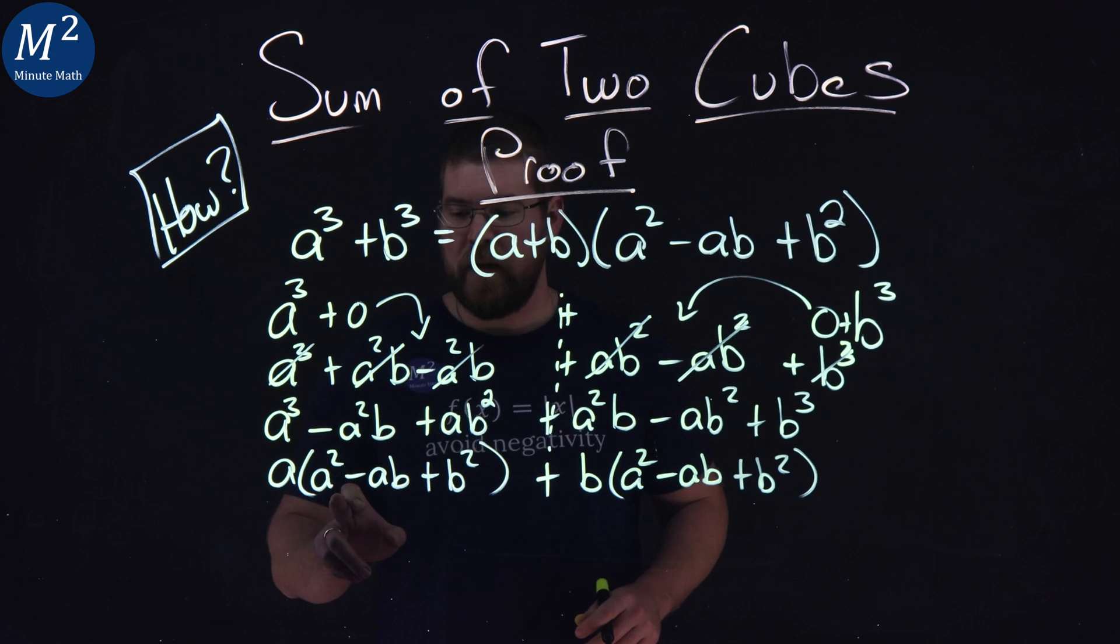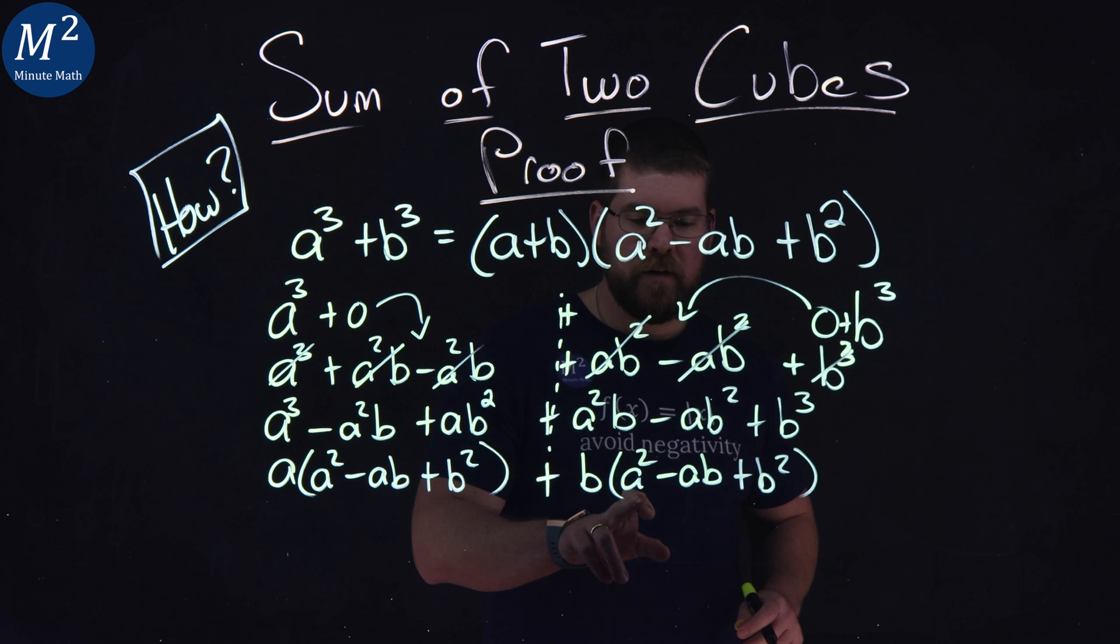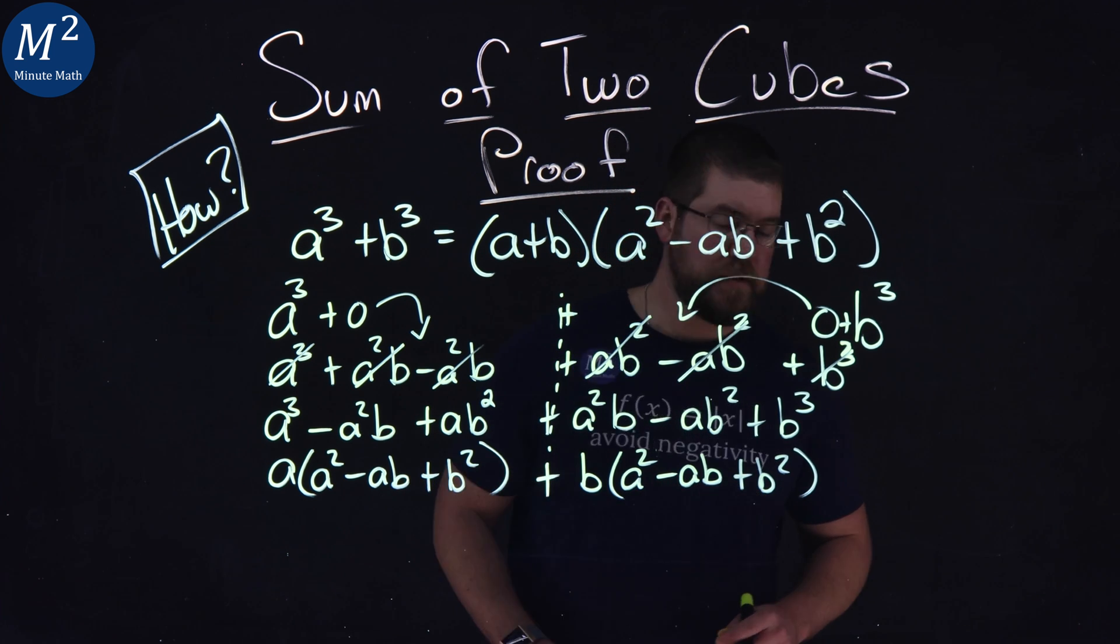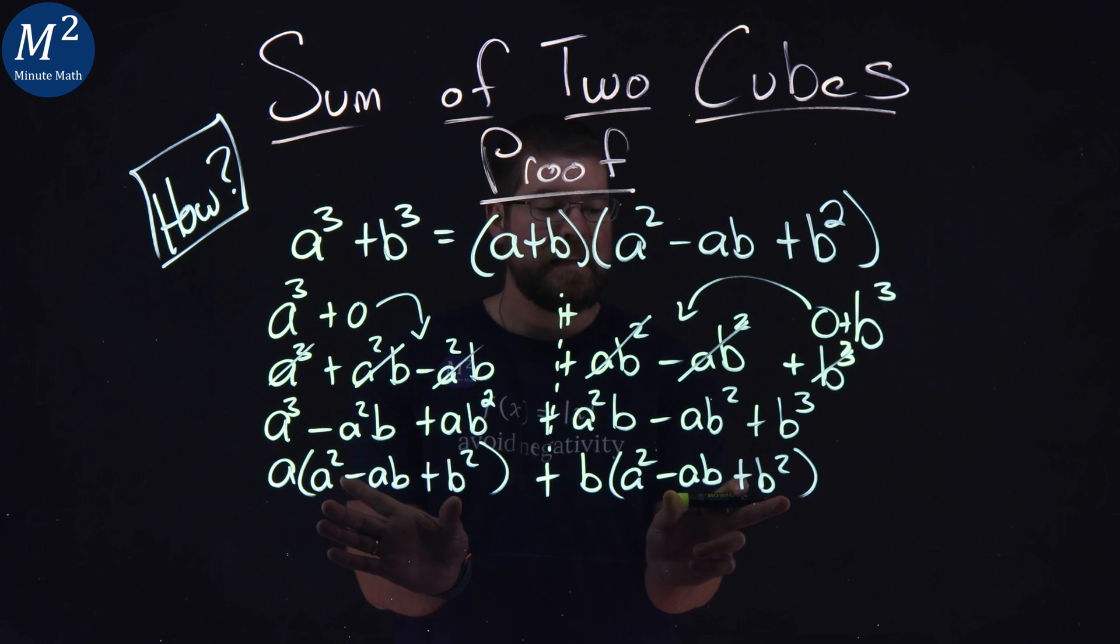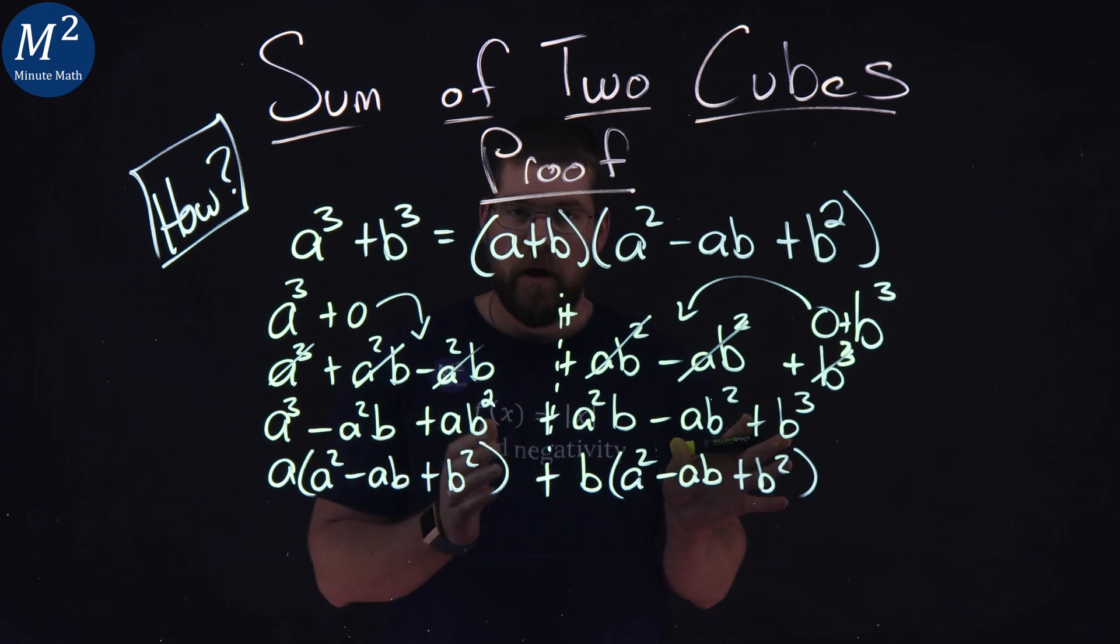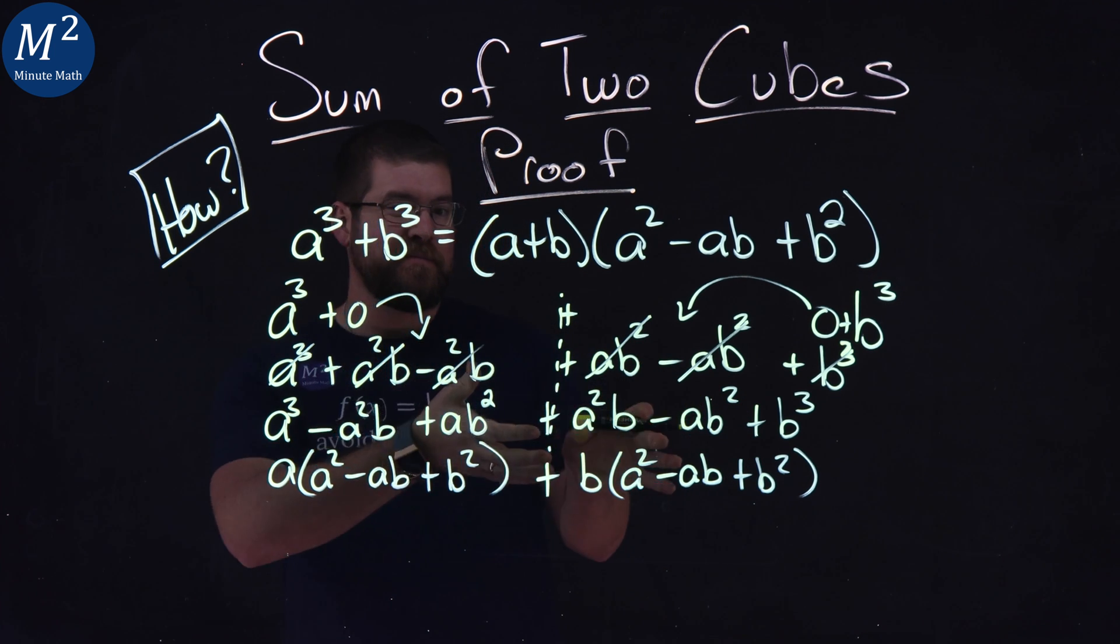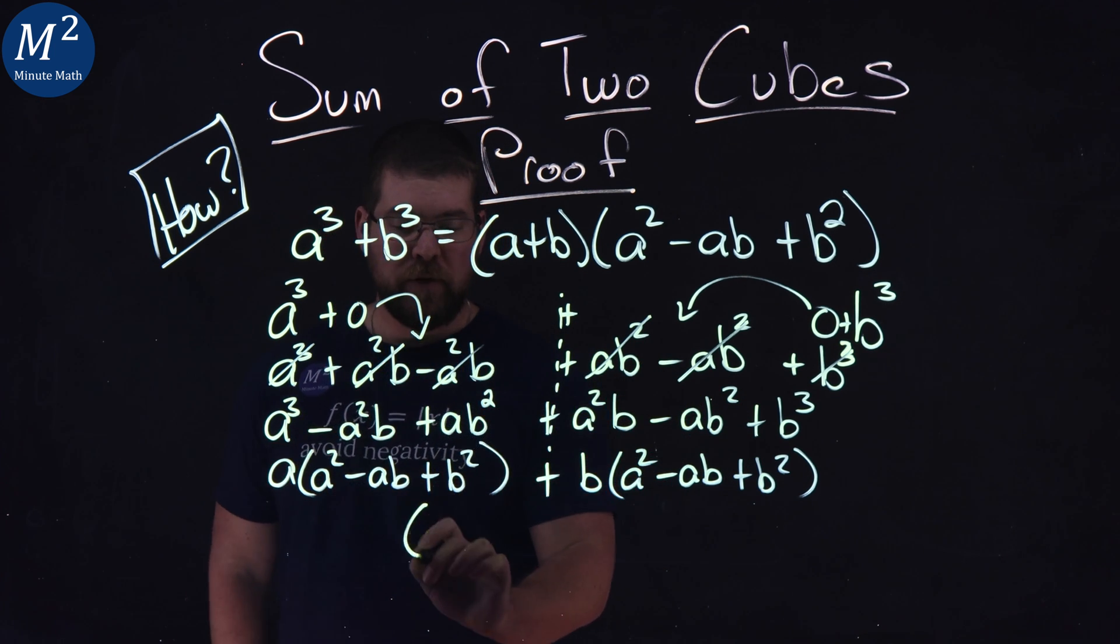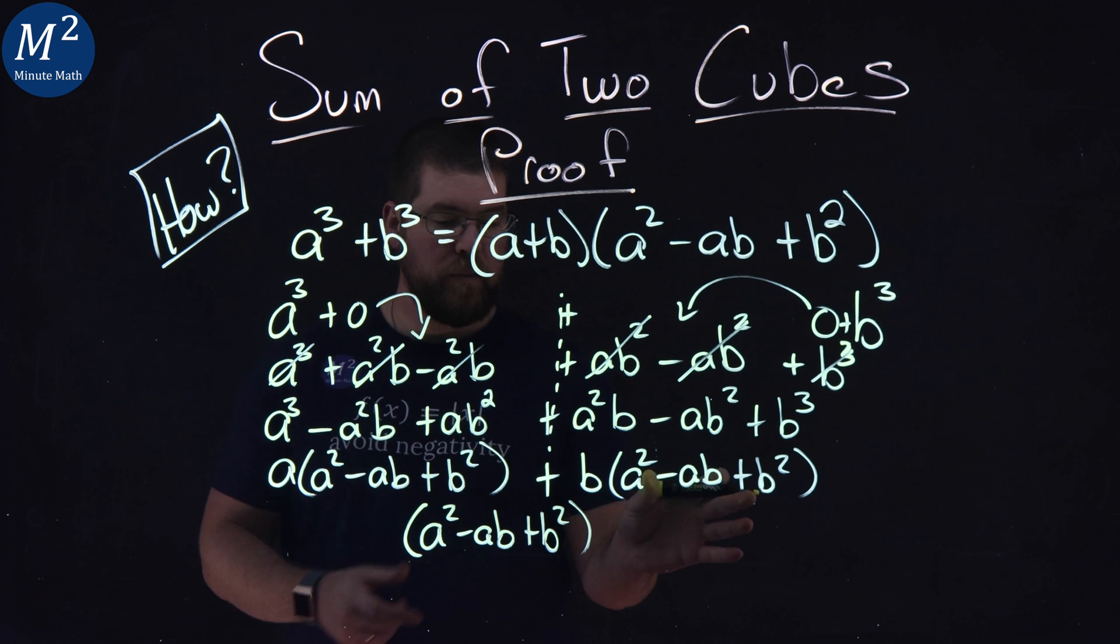So now I have a times a squared minus ab plus b squared and b times a squared minus ab plus b squared. One thing we notice is what's in the parenthesis is exactly the same here on both sides. So if we pull that out, pull that out from both sides of the equation, I'm left with a squared minus ab plus b squared.